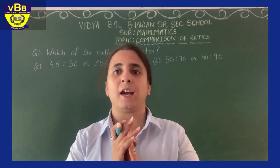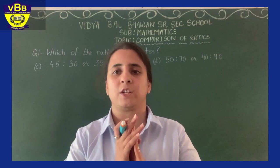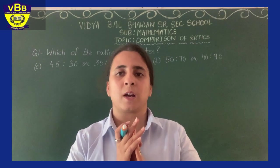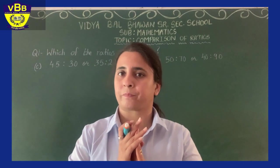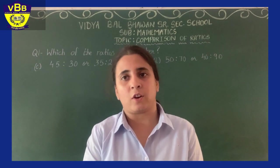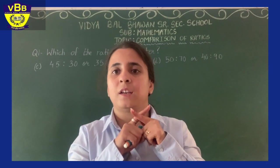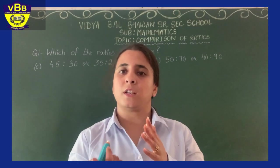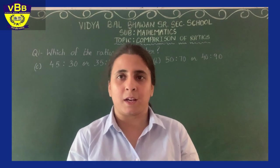You all already know that ratios can be written as fractions. For example, a ratio of 2 is to 3 can be written as the fraction 2 upon 3. So to compare ratios, the first step is to write the ratios in fractional form. Then to compare the fractions, we use the cross multiplication method — whichever product is bigger, that fraction and therefore that ratio is greater.